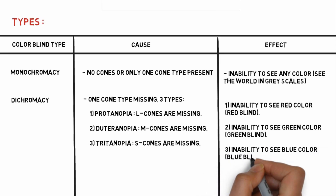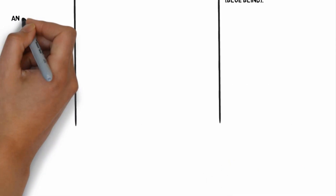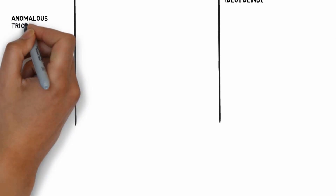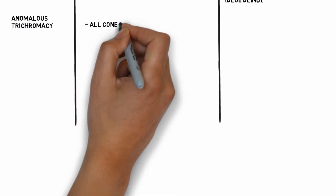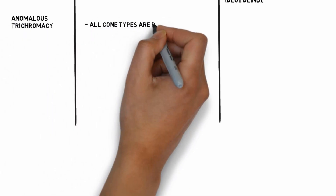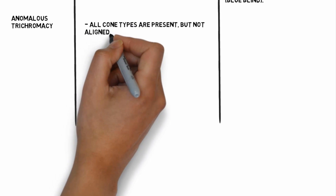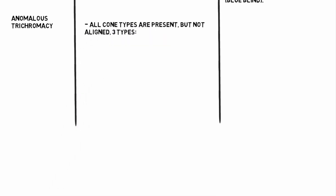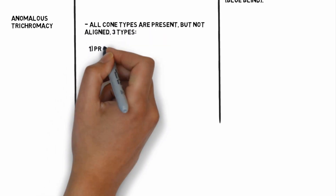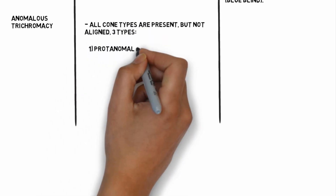Missing of S cones leads to inability to see blue color — blue blindness. The third type of color blindness is trichromacy, in which all cone types are present but are not aligned.